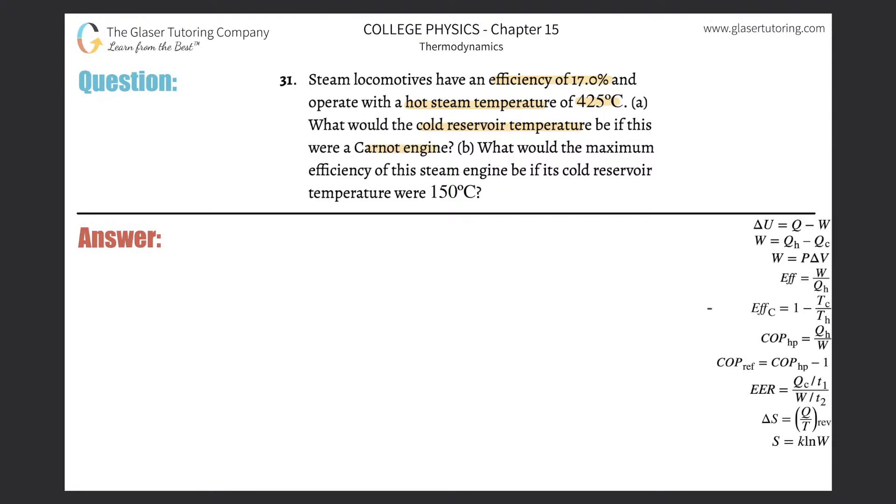So basically, we're talking about efficiency of a Carnot engine. We've seen this a couple of times now, so this should be straightforward. Efficiency of a Carnot engine is equal to 1 minus the temperature of the cold reservoir divided by the temperature of the hot reservoir.